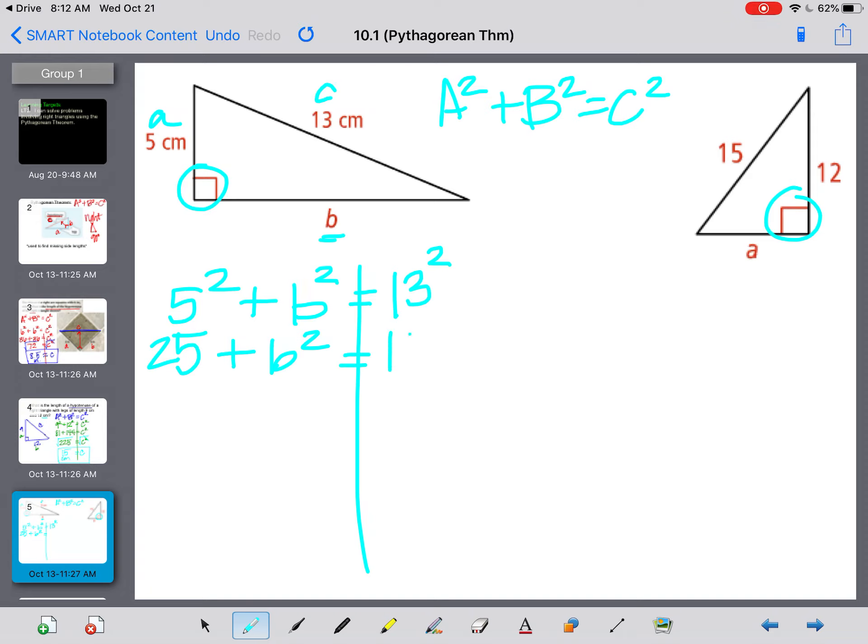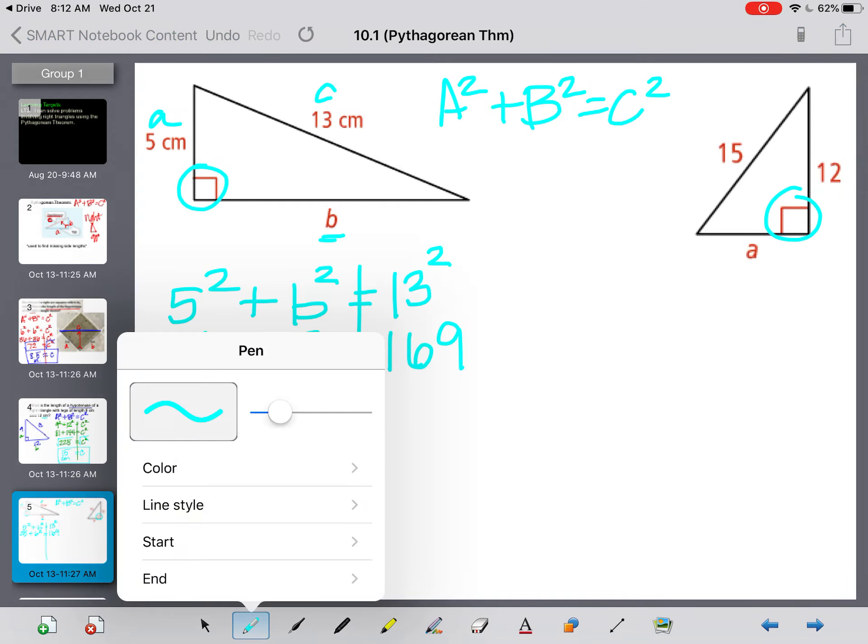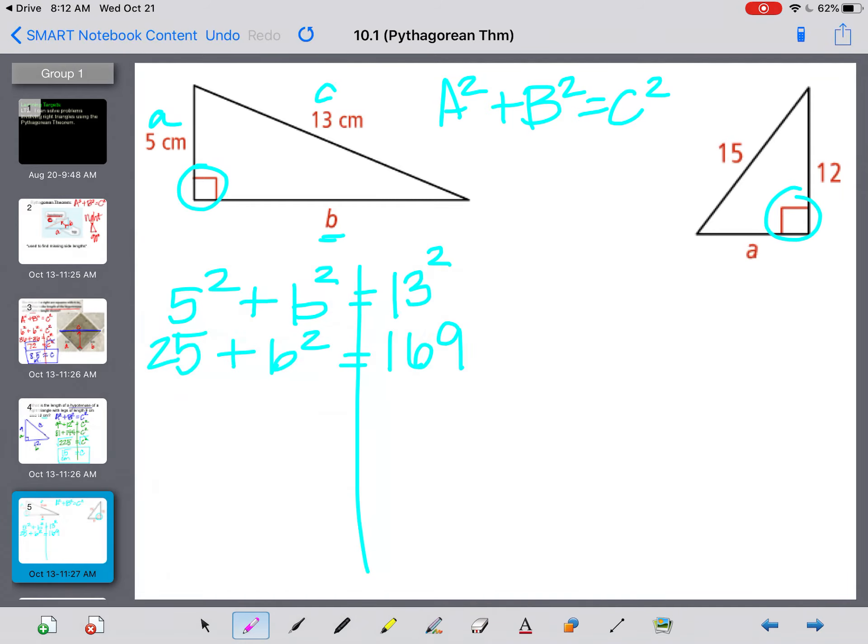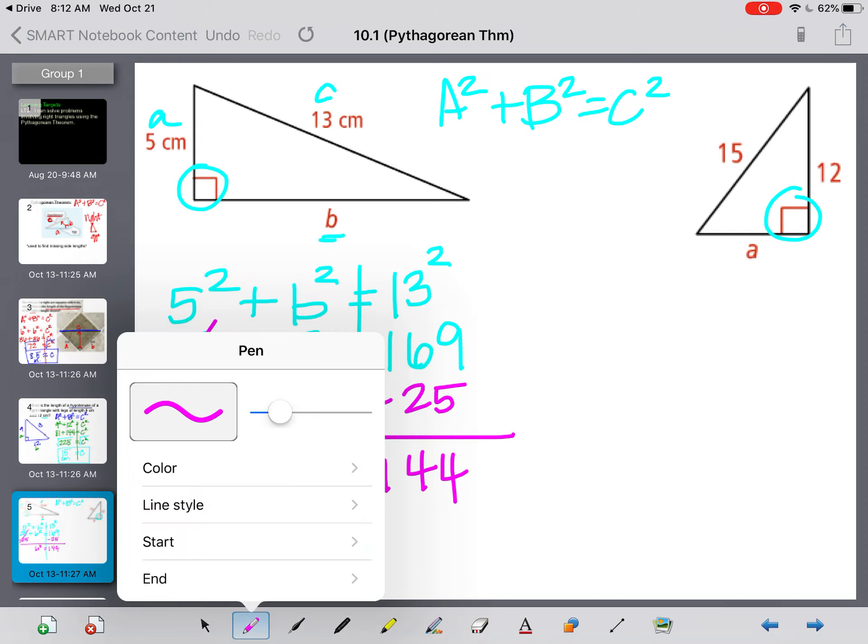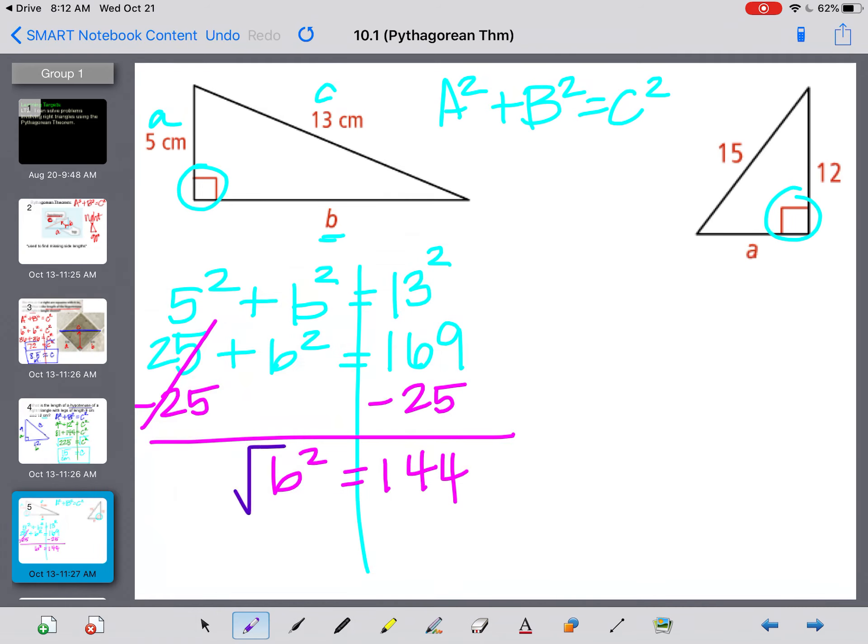I'm going to actually square these things, which gives me 25 plus B squared equals 169. Now I'm trying to get this B by itself, so I need to start working backwards. I'm going to get rid of the 25 by subtracting it or moving it to the other side. 25 minus 25 leaves me with just B squared. And 169 minus 25 is 144. So now I know what B squared is, but to get just B, I need to get the square root on both sides. So B, side B, is actually 12 centimeters.